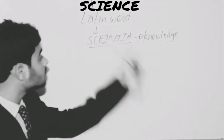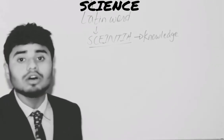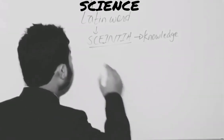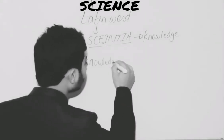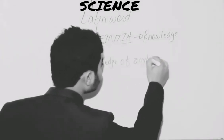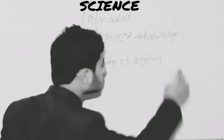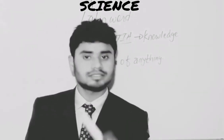So, we can define the term science. Science is a knowledge of anything. What is science? Knowledge of anything is called science.